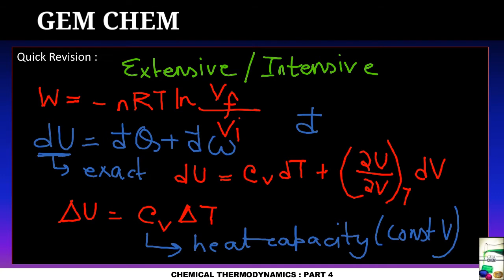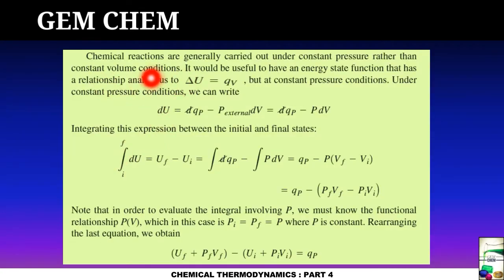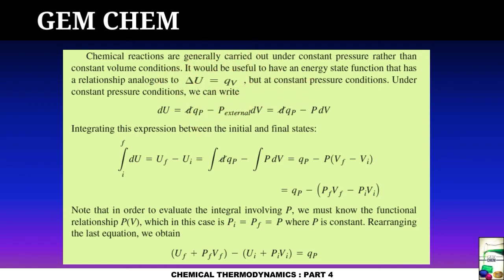Now we are going to derive H — enthalpy. Chemical reactions are generally carried out under constant pressure rather than constant volume, as it is easier to keep the pressure constant. It would be useful to have an energy state function analogous to ΔU = qV. At constant volume, ΔU equals the heat at constant volume. We need a similar expression for when pressure is constant. Under constant pressure, we can write dU = dqP − P_ext dV, ignoring the vdP term.